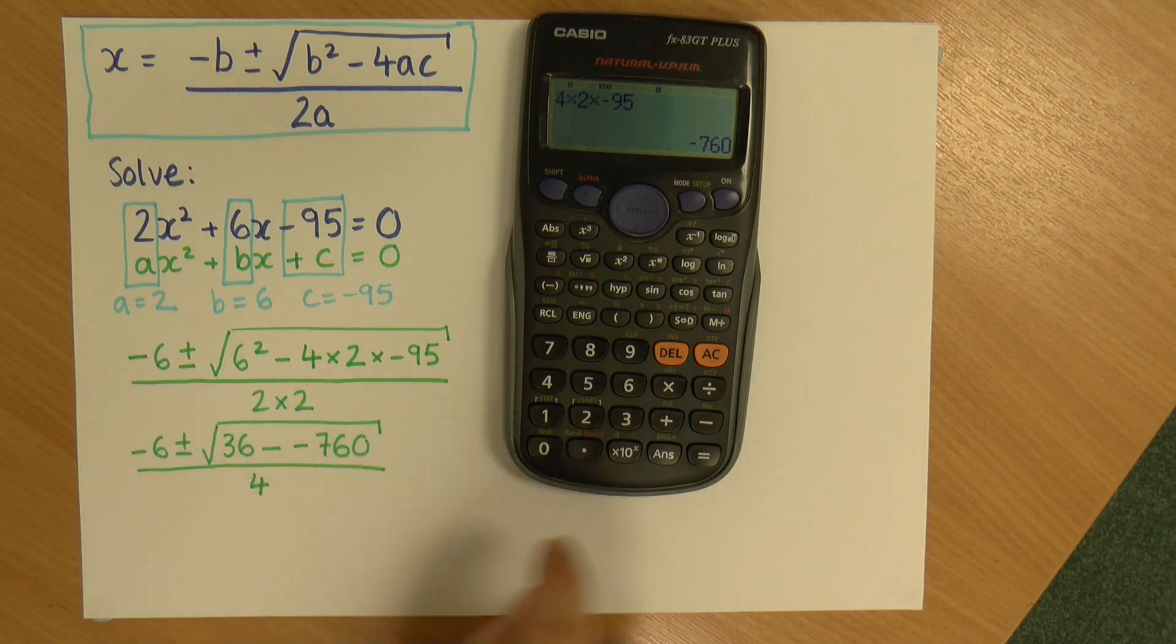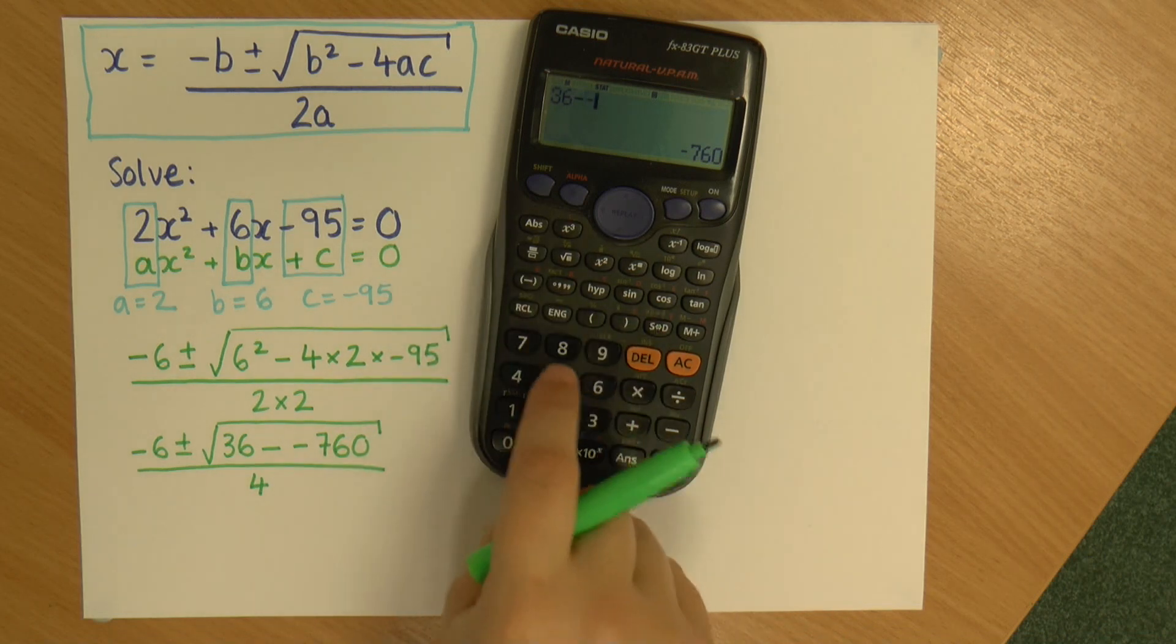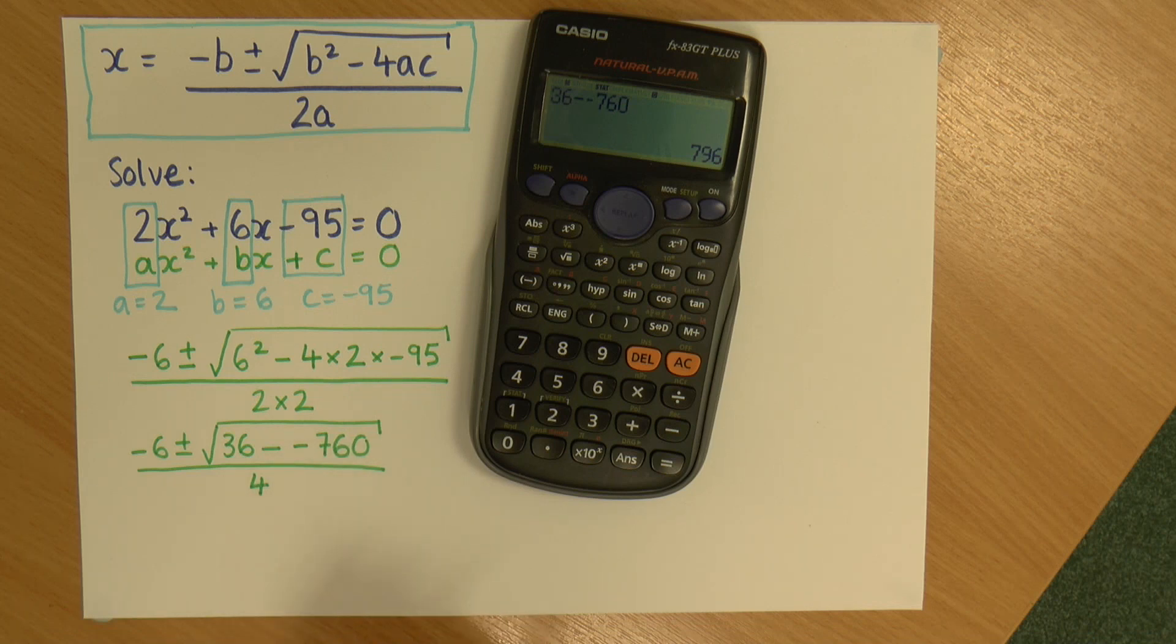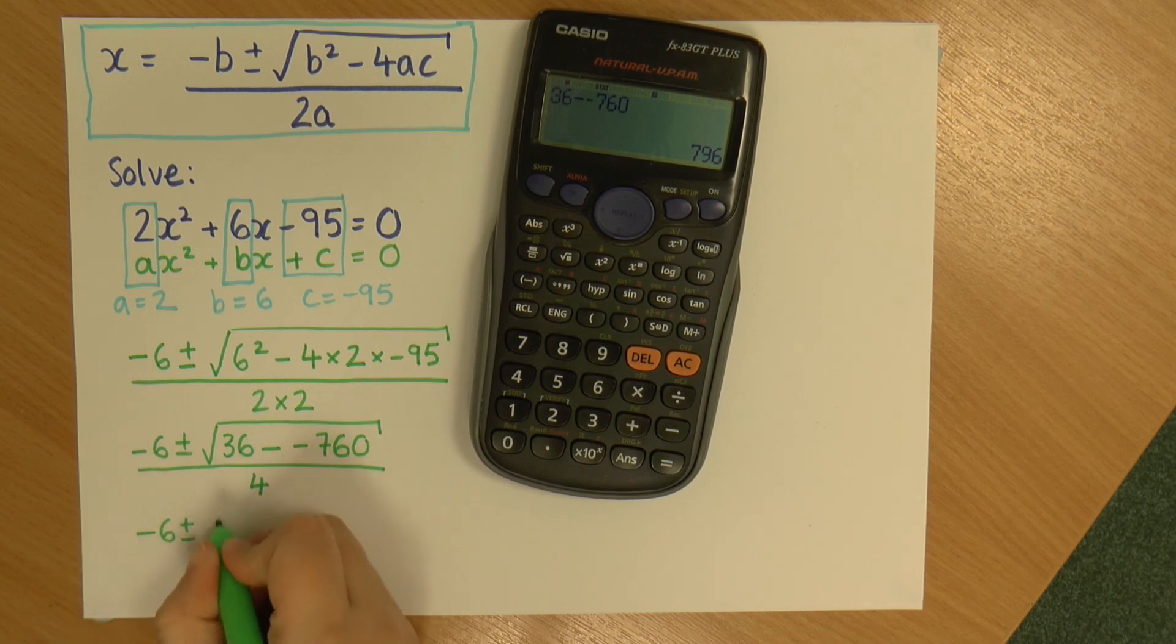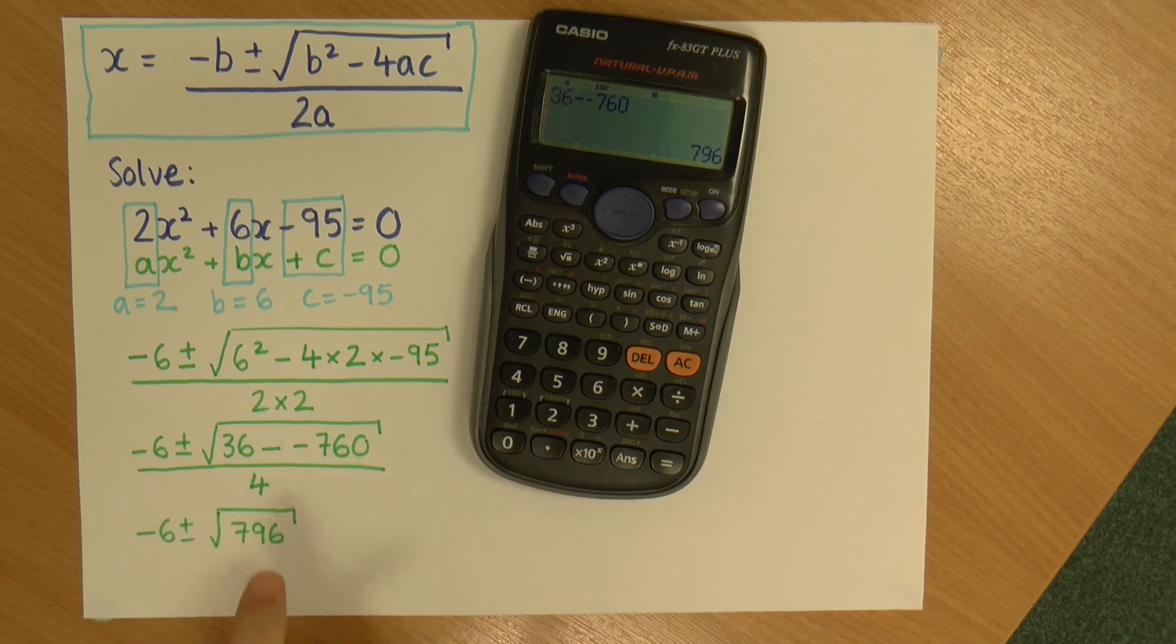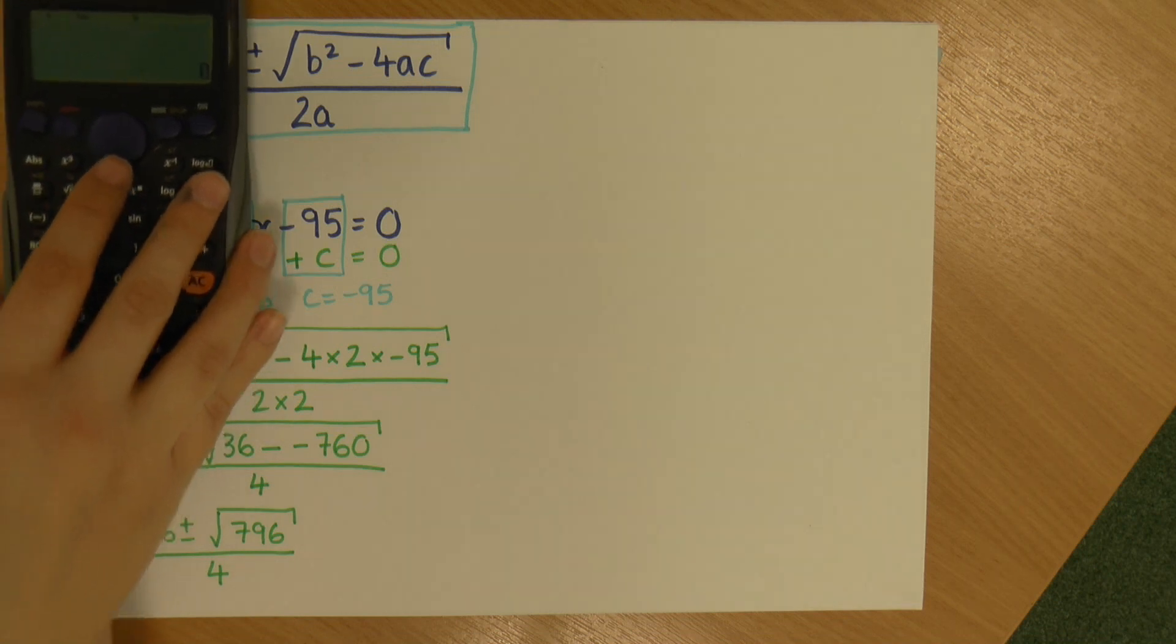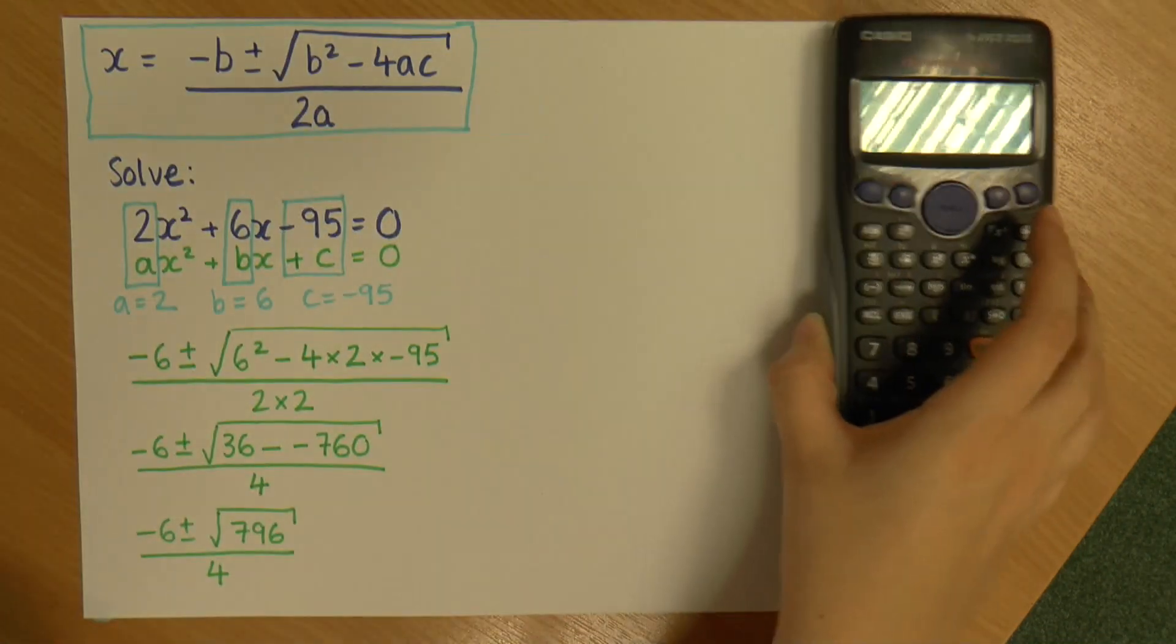So now I'm going to do what's under this bracket, which is 36 take away minus 760, and that is 796. So you'll notice that it's become positive. And this is important because if the number that you're trying to square root is negative, well, you can't square root a negative number at this level, so you'll know you've done something wrong. So now I've simplified this. I have done my 36 minus minus 760 under the square root. And I can now use this. Let me just move this a bit. There's not really a convenient place to put that. Oh, there we go, let's put it over there.